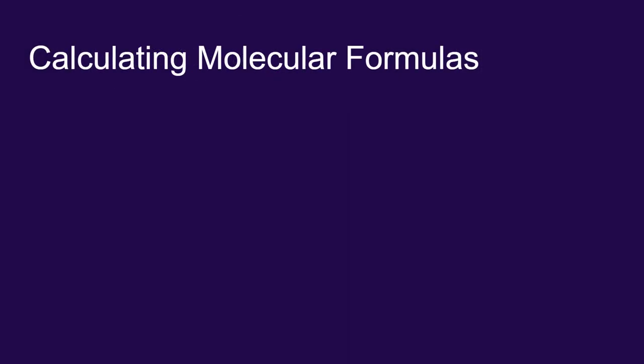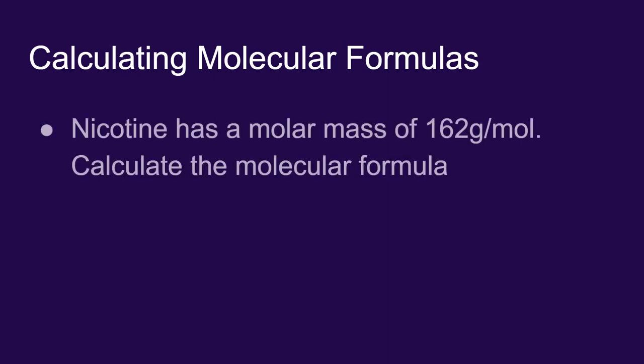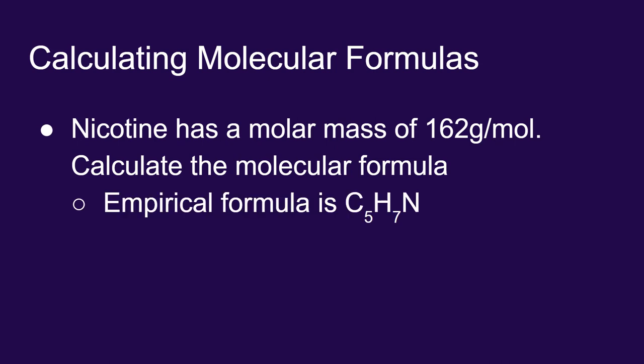The three example problems we've done in these videos have only dealt with finding empirical formulas. Let's take this one step further by finding the molecular formula of nicotine. I know that nicotine has a molar mass of 162 grams per mole. And we just found the empirical formula of nicotine to be C5H7N. With that information, let's find the molecular formula.